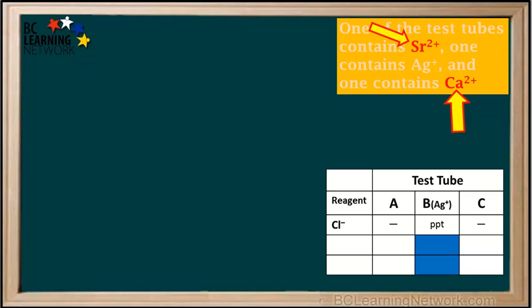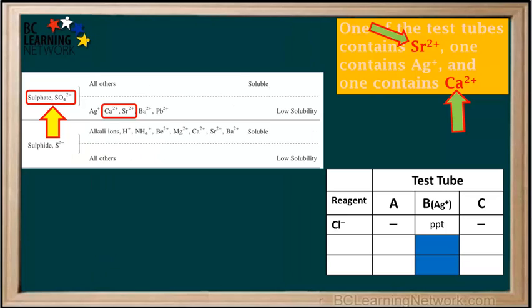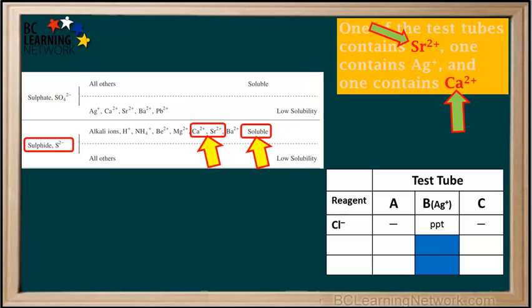Now we need to find which test tube contains strontium and which contains calcium ions. We look at the solubility table to see if there are any anions that would form a precipitate with only one of them. Sulfate would not be suitable because it forms a low solubility compound with both calcium and strontium. Similarly, sulfide would not be suitable either, because calcium and strontium are both soluble with sulfide.